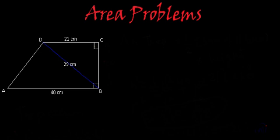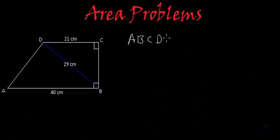Here we have a figure and we have to find the area of ABCD. It is a quadrilateral with four vertices and four sides. But which kind of quadrilateral is it?